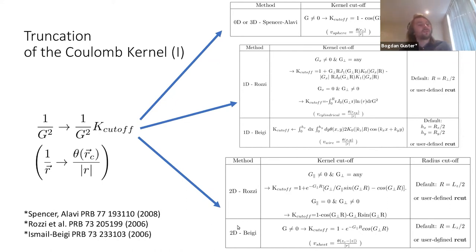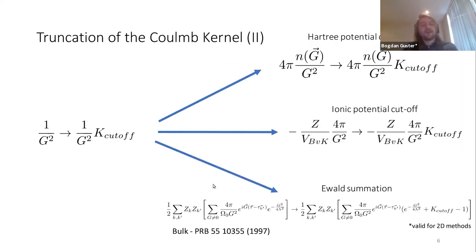Where we have to change the kernel is basically in a couple of parts in the ground state calculation. One is the Hartree potential, another is the ionic potential.